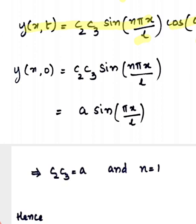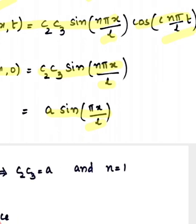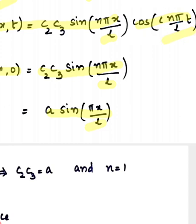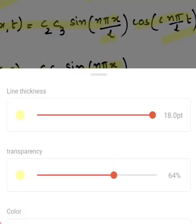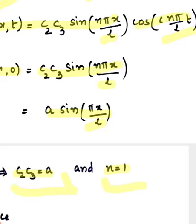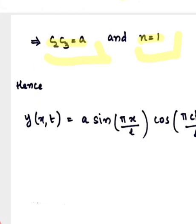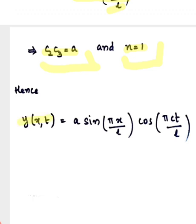Now applying the last condition — that initial displacement is given as a sin(πx/L) — we have y(x,0) equal to c2 c3 sin(nπx/L), and cos(nπct/L) at t=0 equals 1, so y(x,0) equal to c2 c3 sin(nπx/L) equals a sin(πx/L). By comparing terms, we get c2 c3 equal to a and n equal to 1. Hence the final solution is y(x,t) equal to a sin(πx/L) cos(πct/L). Thank you.